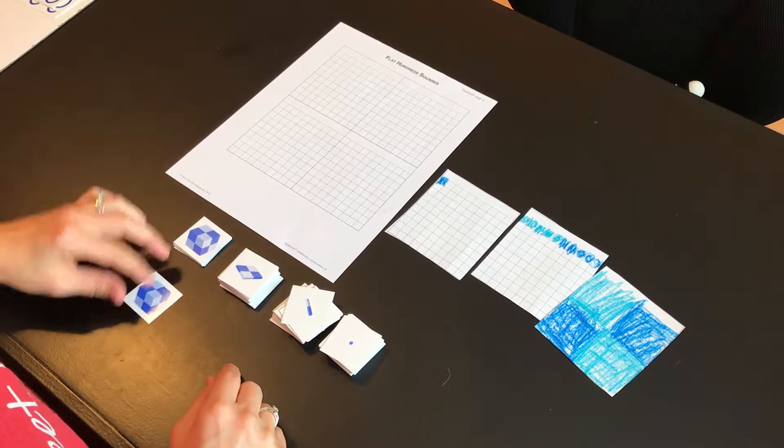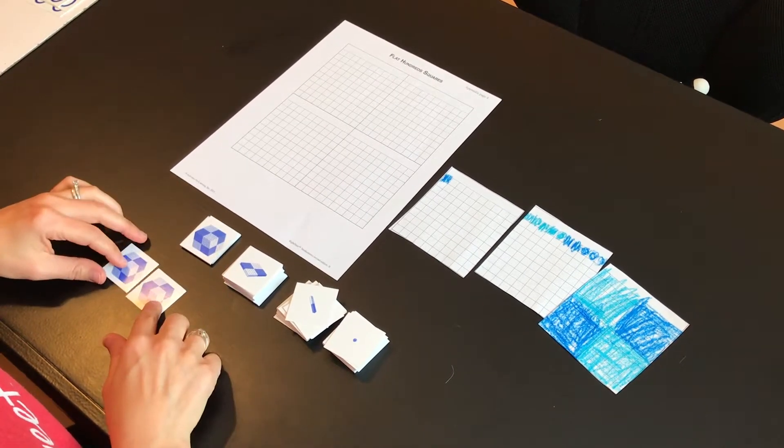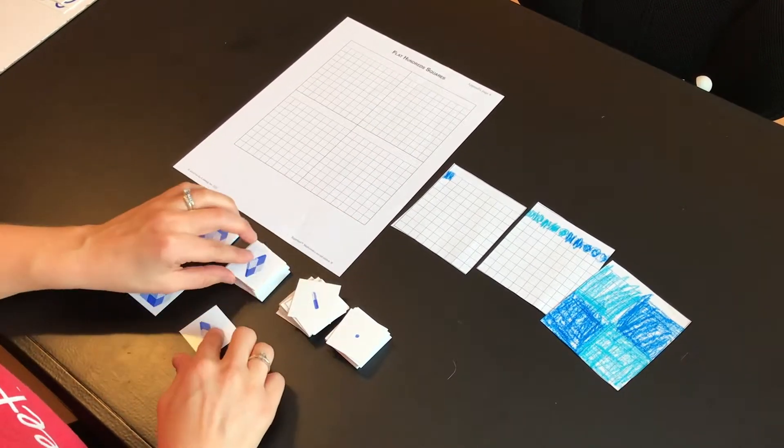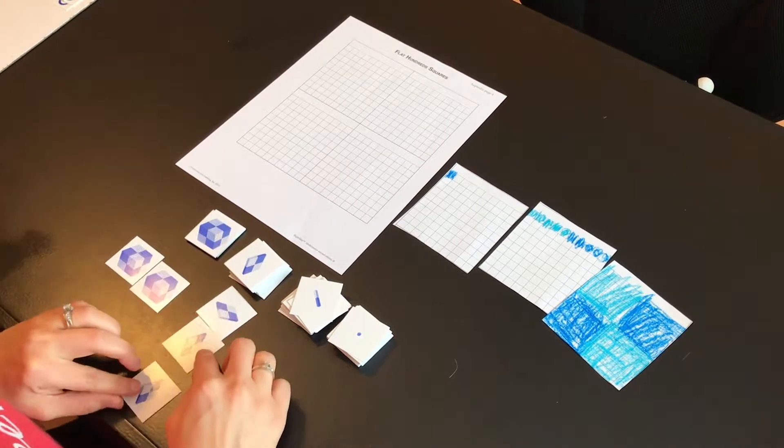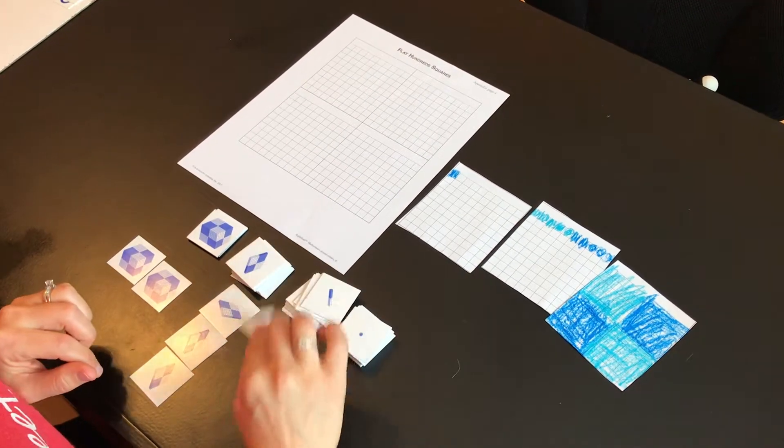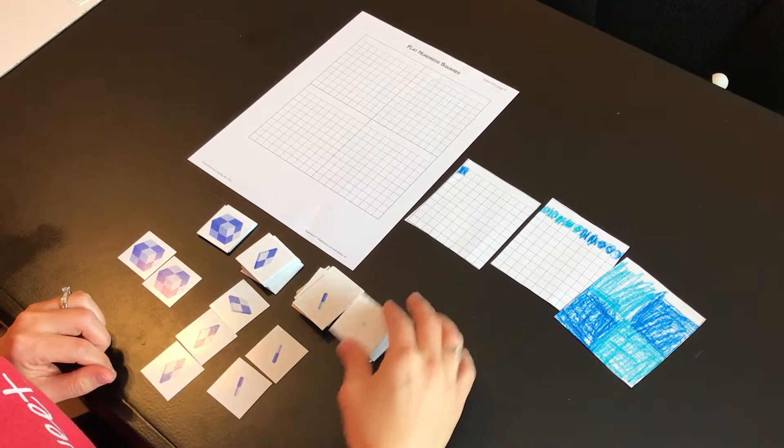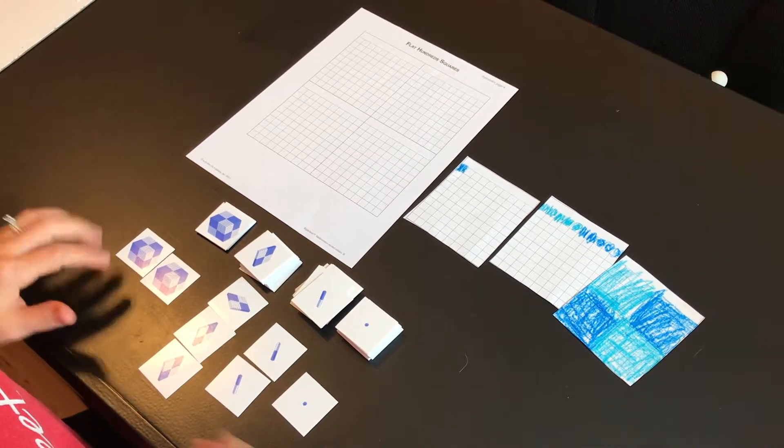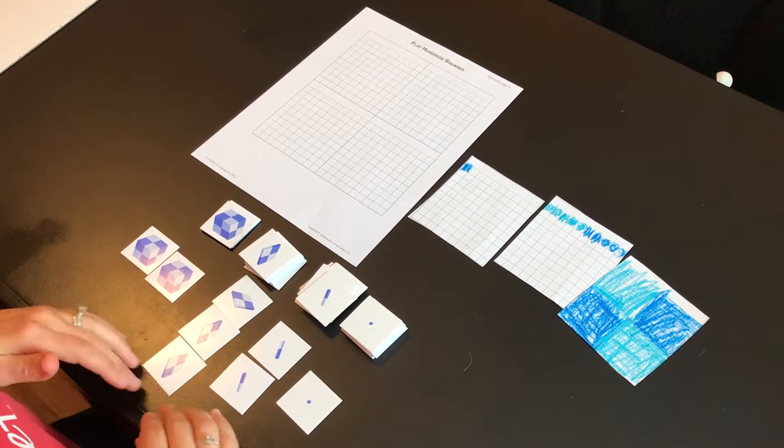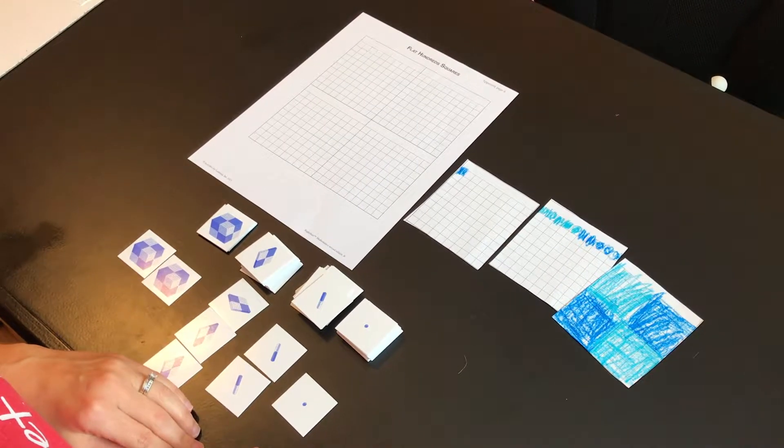So for this example, they could build 2,321. And then they can see the quantities in each place value column.